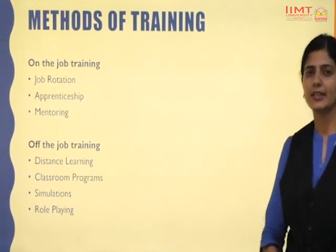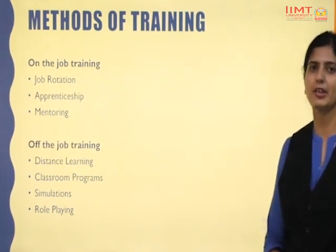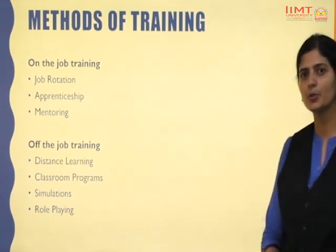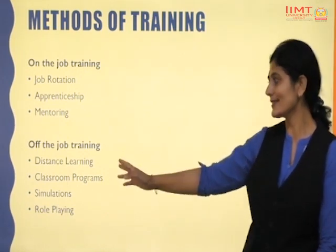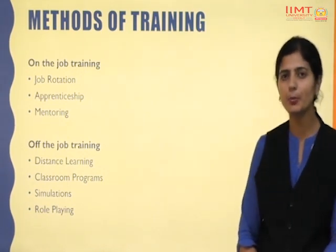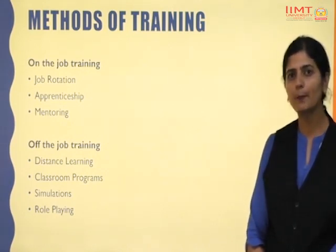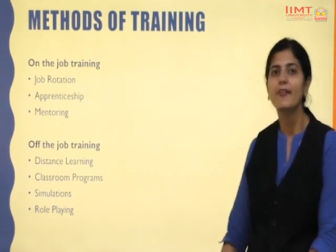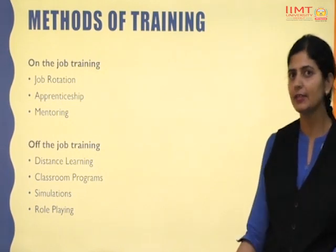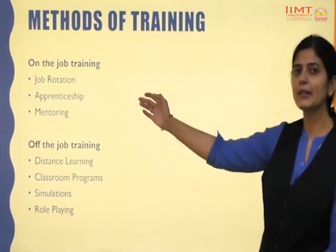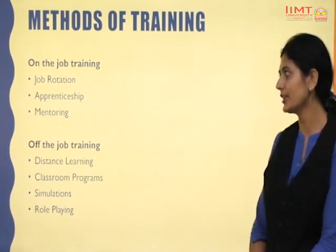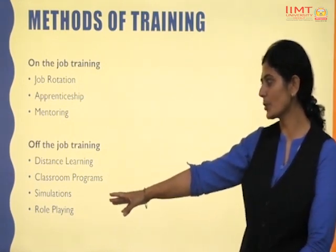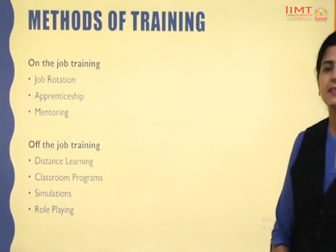Next are methods of training. In an organization, there are different methods of training, classified into two parts: first, on-the-job training methods, and second, off-the-job training methods. On-the-job training means when an individual employee gets training while performing his job simultaneously. Off-the-job training means when he is relieved for some time and gets training. On-the-job training methods include job rotation, apprenticeship, and mentoring. Off-the-job training methods include distance learning, classroom programs, simulation, and role playing.